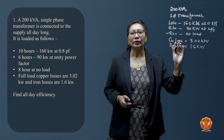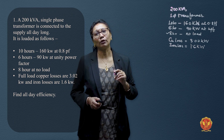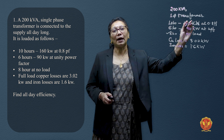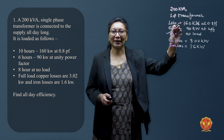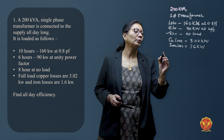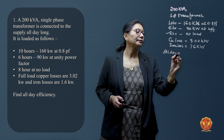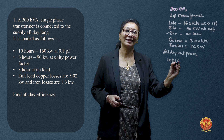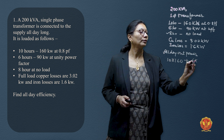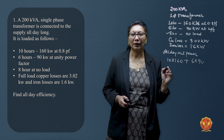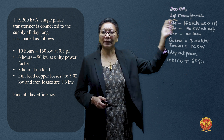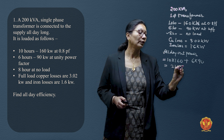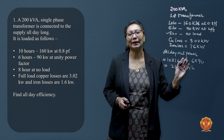We have to calculate all-day efficiency. All-day output power is calculated by multiplying power by hours of working. So: all-day output = (10 hours × 160 kW) + (6 hours × 90 kW at unity power factor). Since ratings are already in kW, this comes out to 2140 kWh of energy consumed by the load.